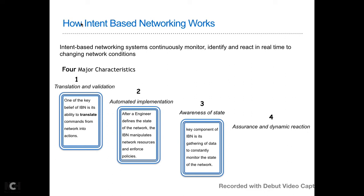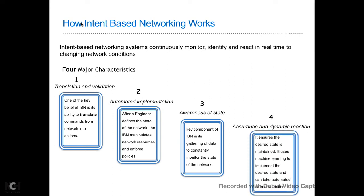The system can take appropriate actions to maintain the network state. Assurance means you are given a guarantee that a particular state is maintained, based on intelligent algorithms and machine learning. It can take automated corrective action so you don't need to worry — it is not reactive mode; it is more proactive, and can even be predictive at times. This covers how intent-based networking works.